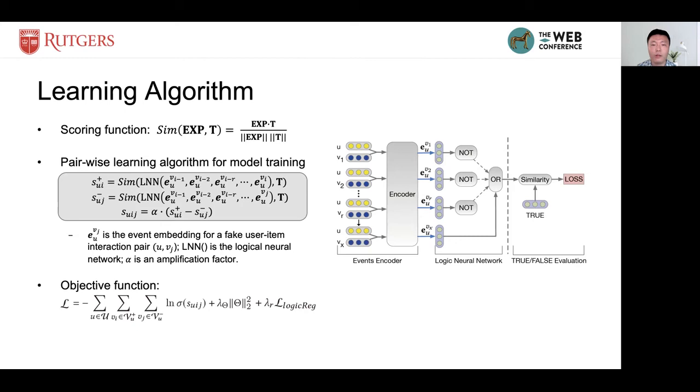Then, we optimize the model by maximizing the difference between these two scores. The objective function is given here. The alpha here is an amplification factor, which is to guarantee that the input is appropriate for the sigmoid function.